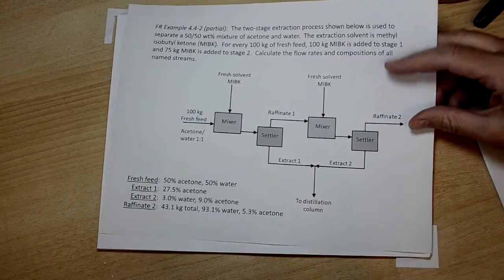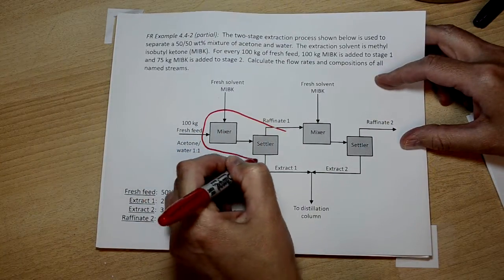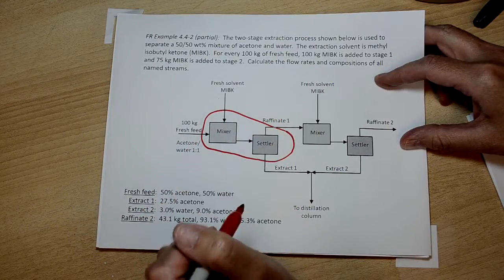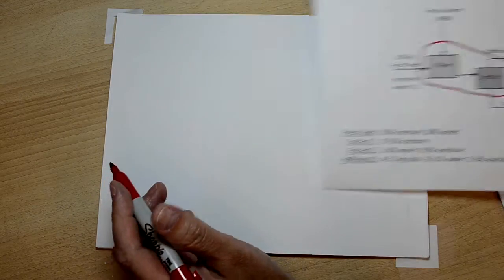Okay, so again, here's our problem, and here's where we're going to do the balance, and we need to go back through our materials to find the compositions of the raffinate one stream as much as we know about the extract one, and then to redraw our flow diagram.